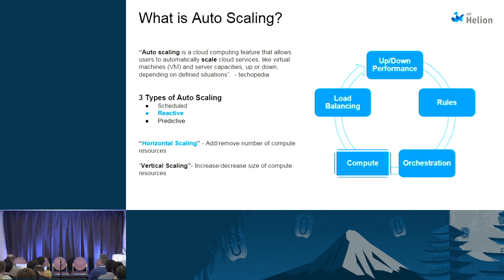Reactive mode is very useful in a situation where you are launching a new cloud application and you don't know whether user usage will be huge or lesser - you cannot predict. In reactive mode, somebody will be monitoring your cloud applications and when things go up or down, it will notify the respective person to take care of scale up or scale down. The third one is predictive: you have been running your application for a while, have history of data, and based on that you can make a prediction, so you can go for predictive auto scaling.